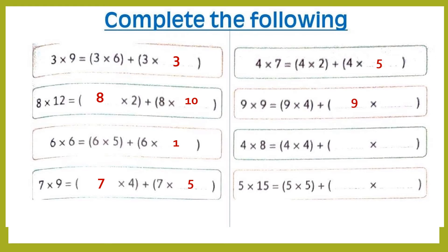9 by 9 — the first 9 stays the same and the second 9 we break into 4 plus 5. Then: 4 by 8 equals 4 plus 4 by blank — here the 8 becomes 4 plus 4. And 5 times 15 equals 5 by 5 plus blank — the 5 stays the same and 15 we break into 5 plus 10.